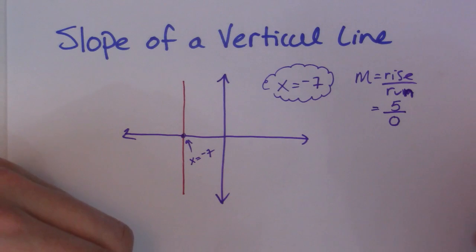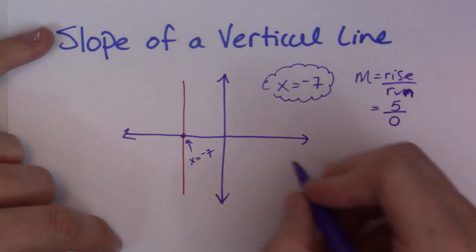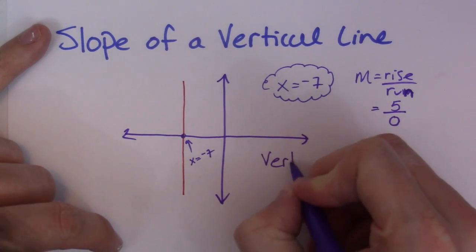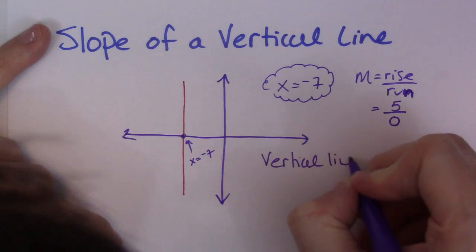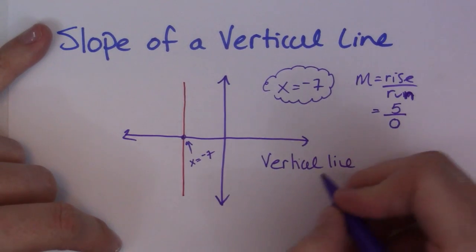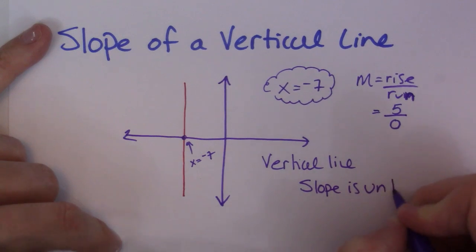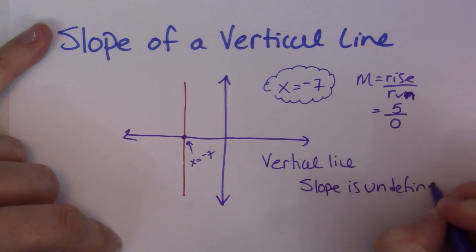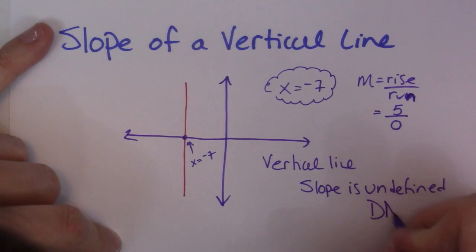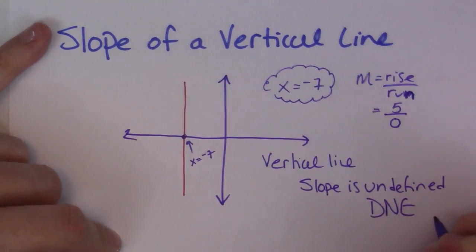So what that means is the slope doesn't exist. So for a vertical line, it doesn't have a slope. The slope is undefined, okay? My students like to write DNE, does not exist.